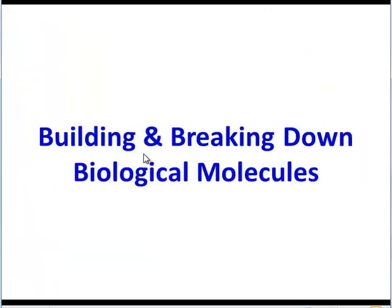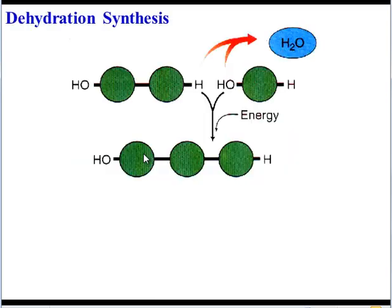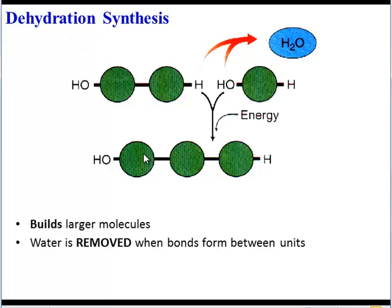So, one last thing. We said at the very beginning that water was necessary for chemical reactions. Well, specifically, it's necessary to build and to break down those molecules you just learned about. One process, known as dehydration synthesis, is used to build larger molecules. And it's called dehydration because essentially what you do is you remove a water molecule from two monomers, and by doing so, you allow those monomers to bond together. So water is removed, bonds form, and you synthesize or build a bigger molecule.